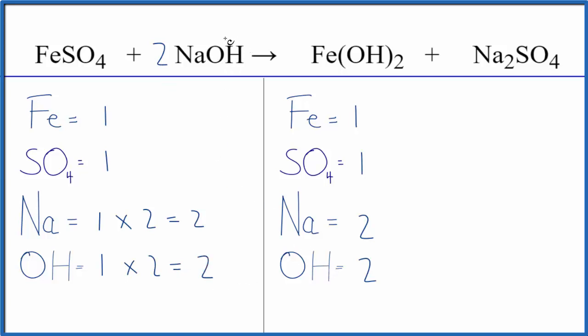So by counting these polyatomic ions as one item, it just makes it a lot easier to balance double displacement reactions. This is Dr. B with the balanced equation for iron 2 sulfate plus sodium hydroxide. Thanks for watching.